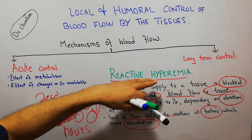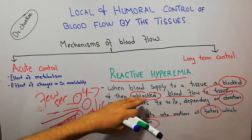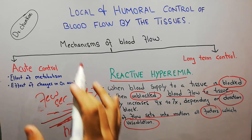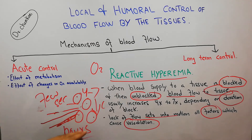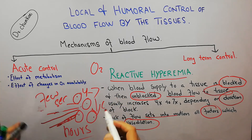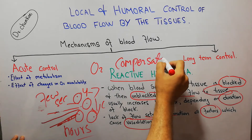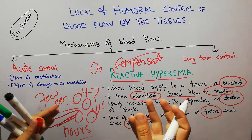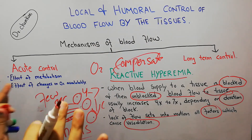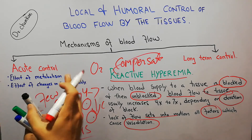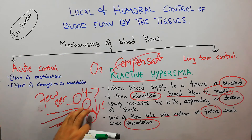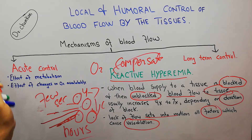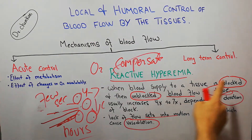So oxygen deficiency, or less amount of oxygen coming to the tissue, plays a role in reactive hyperemia. After the block has been removed, the amount of oxygen that will come to the tissue will be sufficient enough to compensate for the oxygen which was blocked. For example, if a small amount of oxygen was coming to this tissue in normal blood flow and that has been blocked, as soon as the block is removed, a large amount of oxygen will come and will try to compensate for the oxygen that was blocked.